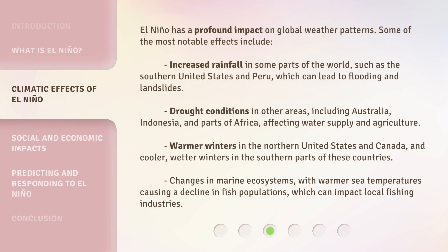El Niño has a profound impact on global weather patterns. Some of the most notable effects include increased rainfall in some parts of the world, such as the southern United States and Peru, which can lead to flooding and landslides. Drought conditions in other areas, including Australia, Indonesia, and parts of Africa, affecting water supply and agriculture. Warmer winters in the northern United States and Canada, and cooler, wetter winters in the southern parts of these countries. Changes in marine ecosystems, with warmer sea temperatures causing a decline in fish populations, which can impact local fishing industries.